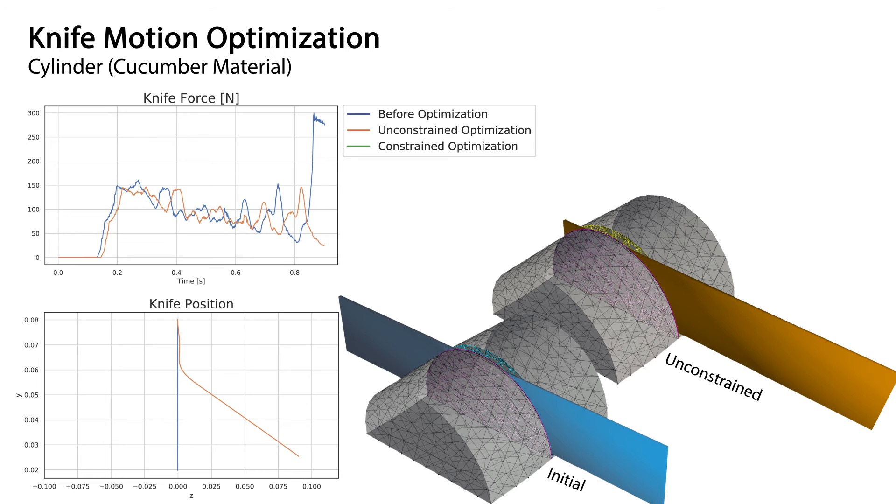Therefore, we add a hard constraint to keep the lateral motion within valid limits and employ the modified differential method of multipliers to perform constrained optimization.